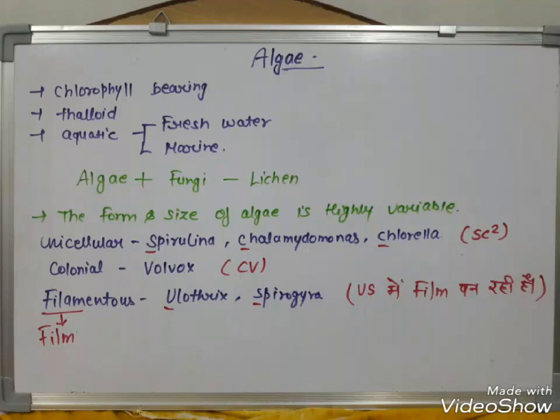Algae can be unicellular, colonial, or filamentous. Unicellular examples include Spirulina and Chlorella. Colonial and filamentous examples include Ulothrix and Spirogyra. The trick to remember these is 'U.S.' — this is very important and I hope you like this trick because you can remember it quickly.